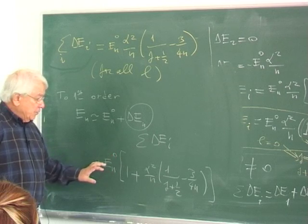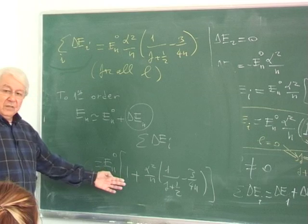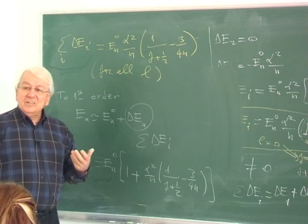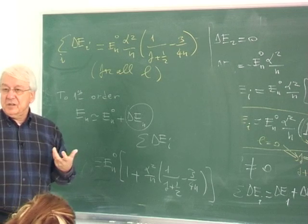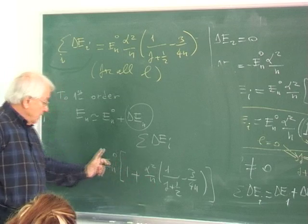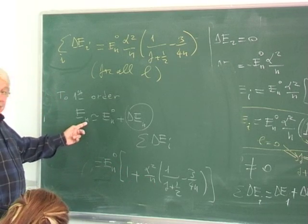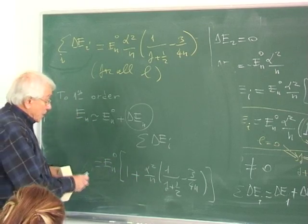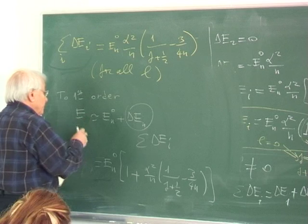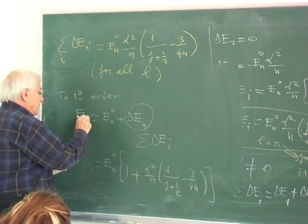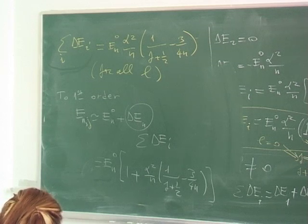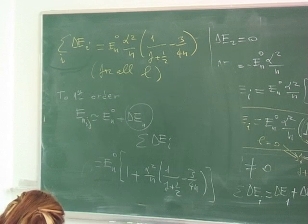Obviously, the degeneracy is lifted somewhat, and the final corrected energy carries that additional index too. I will use a different color to indicate that this new index popped up. The original one was fully degenerate, labeled by a single N. Now the corrected one carries an additional index — J — which distinguishes between the states originally degenerate.